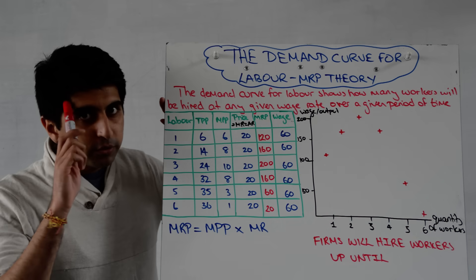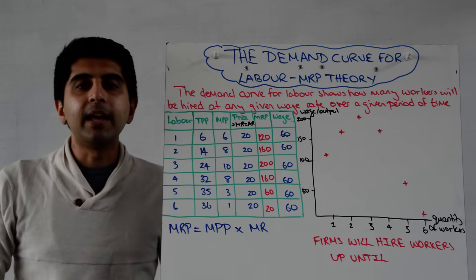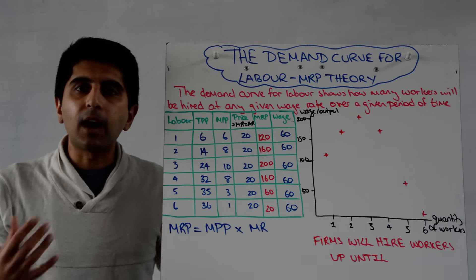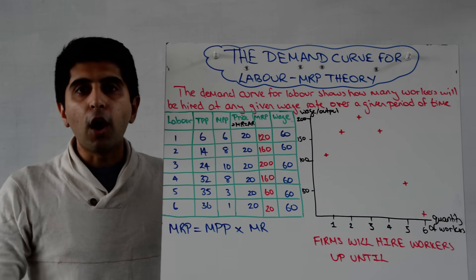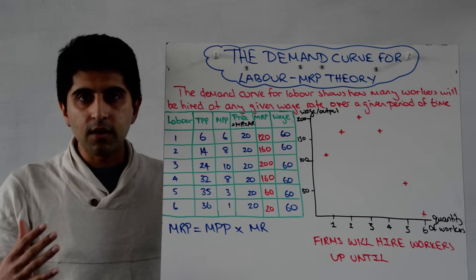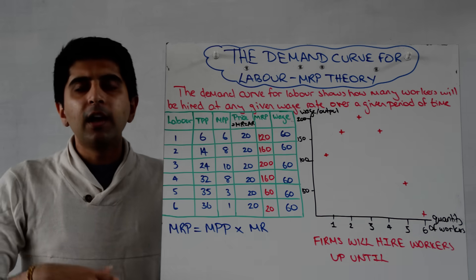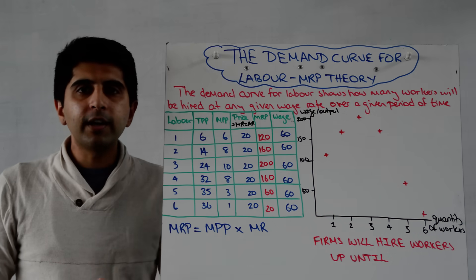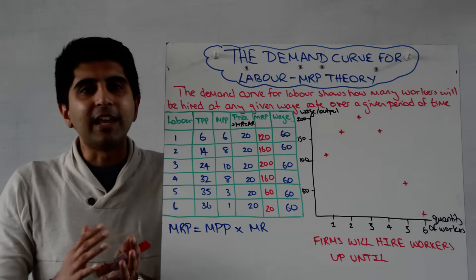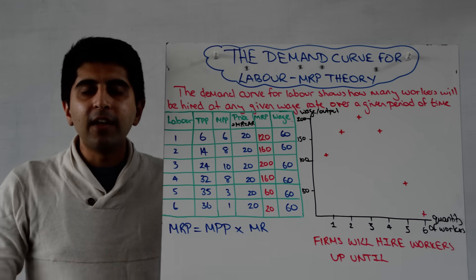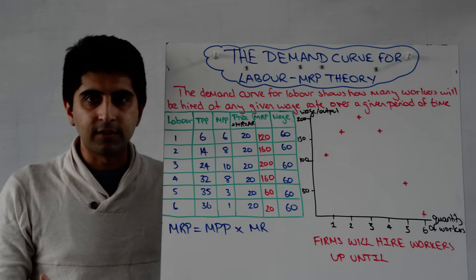It's also important to remember that the demand for labour is a derived demand — it comes from the demand for goods and services. Only when the demand for goods and services is high will labour demand be high. That implies that firms hire workers not because they get a thrill out of it or enjoy doing it; they employ workers because there is a need for them to produce goods and services.